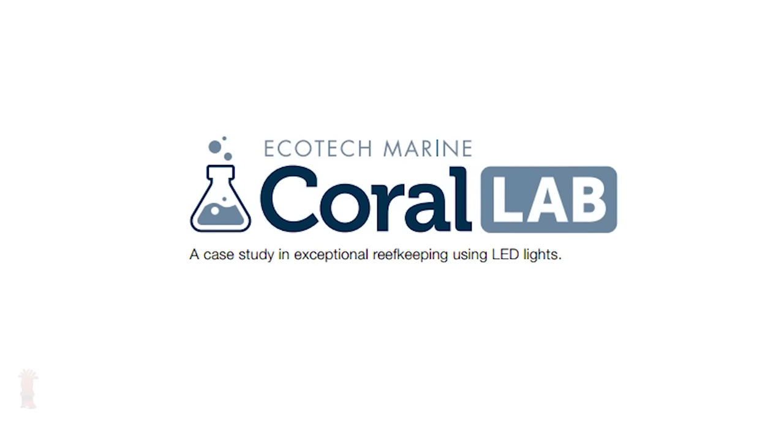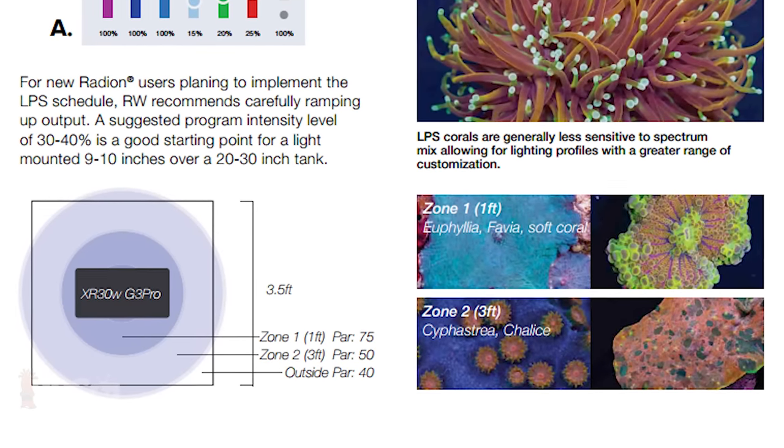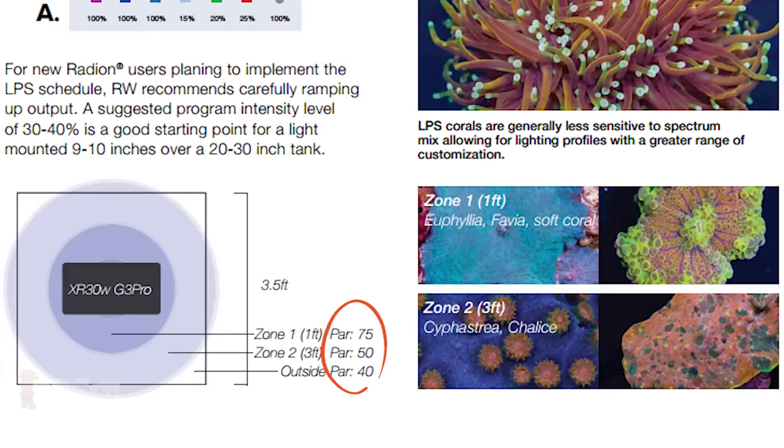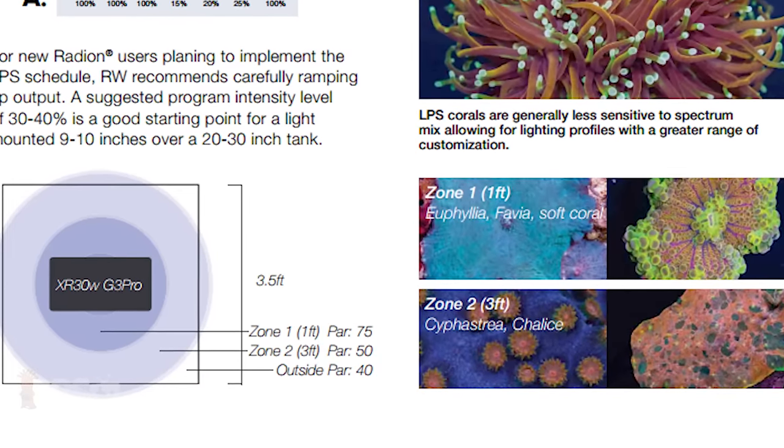Keep in mind Ecotech's CoralLab results indicated reef wholesalers shoot for a range of 40 to 75 PAR for LPS which is pretty darn low.